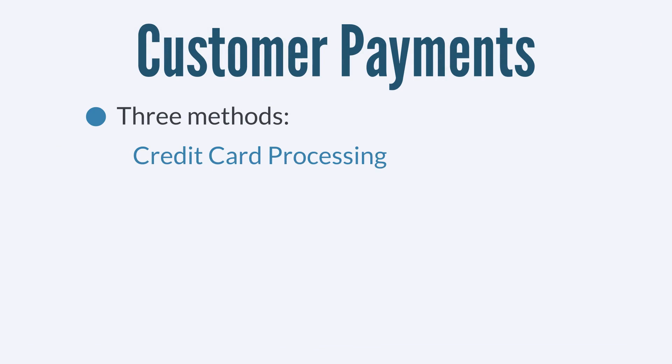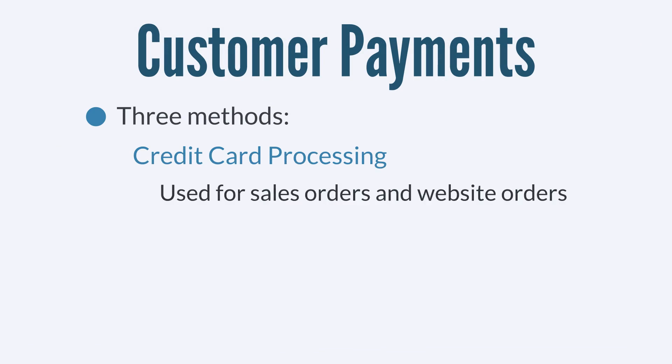The second customer payment method is credit card processing. This method is used primarily for payments on sales orders and website orders. Before you can use this feature, you need to make sure you have connected a credit card gateway like MerchantE or CyberSource with your NetSuite account.